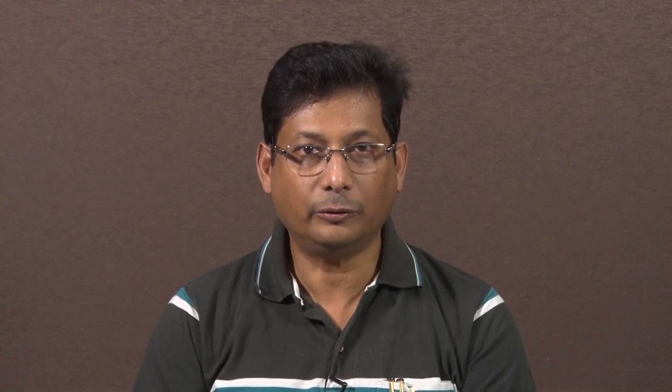Today I am going to discuss the concept of another two popular deep architectures: one is the autoencoder and another one is the RNN, that is the recurrent neural network. I will briefly introduce these two architectures — autoencoder and the recurrent neural network.